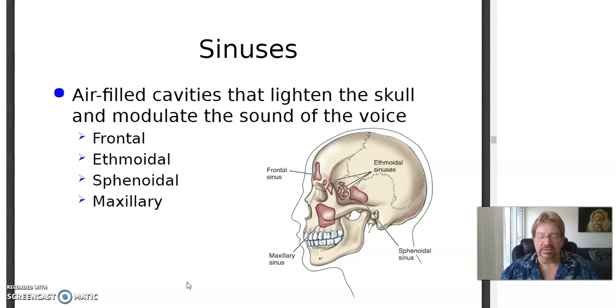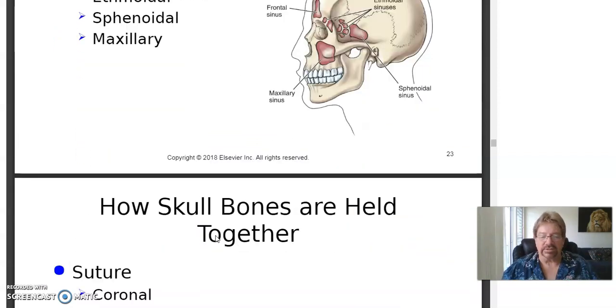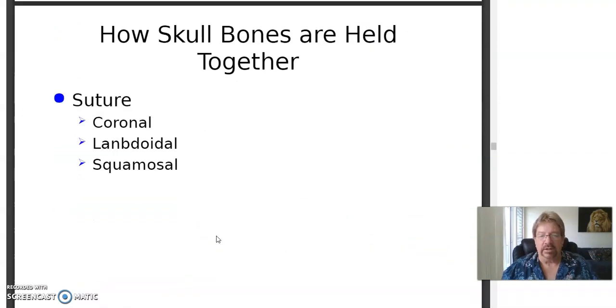Bones have joints in them, but in the adult they're immovable joints. Once they fuse, they lock in place and they're called sutures. That's the official name. When you get stitches at the doctor's office, they're called sutures. Three sutures are coronal, lambdoidal, and squamosal.